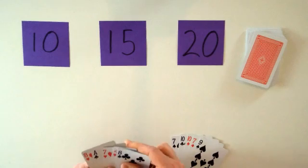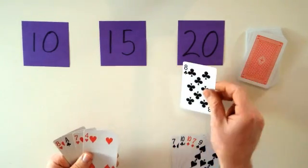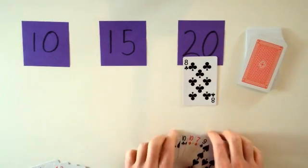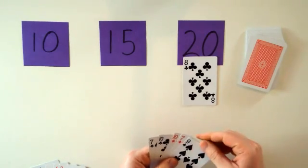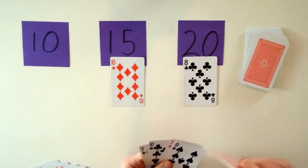Okay, this next player's turn, and they're going to put down an 8 on the 20 pile and pick one up. This player can put a 10 on the 15 pile and pick one up.